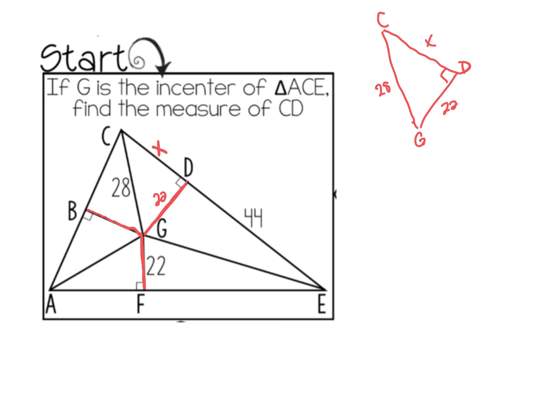Now in this maze you're going to be using Pythagorean theorem quite a bit. So I'm going to do a squared plus b squared equals c squared. I know c has to be my hypotenuse. So I have x squared plus 22 squared equals 28 squared. I need to subtract 22 squared from both sides. So if I do 28 squared minus 22 squared, I get x squared equals 300.